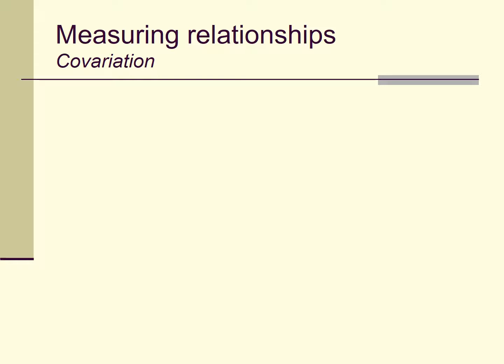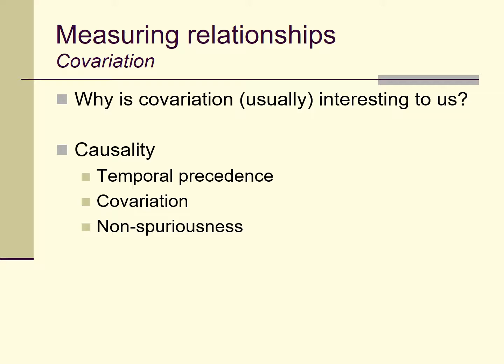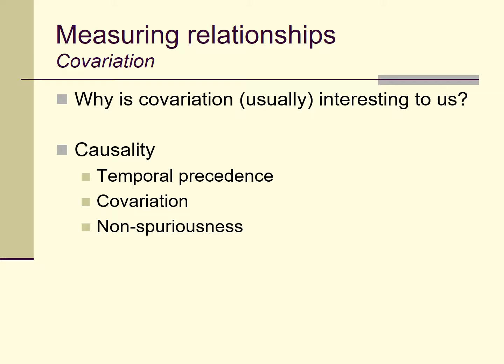Covariation is important because in psychology and behavioral sciences we're often interested in causal relationships between predictor and outcome variables. Back in Unit 1, I talked about three criteria for causal relationships: temporal precedence, covariation, and non-spuriousness. Covariation is a really important criterion when making judgments about causality.